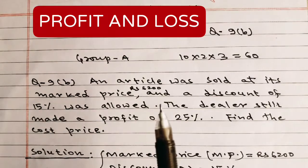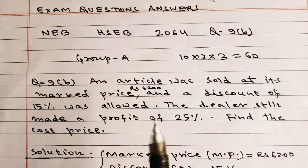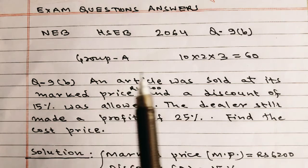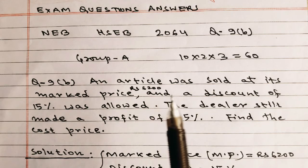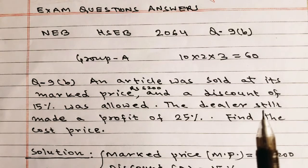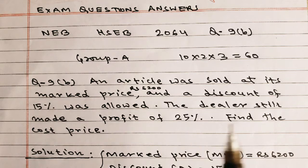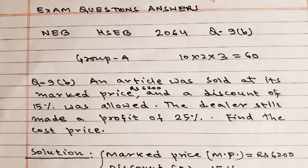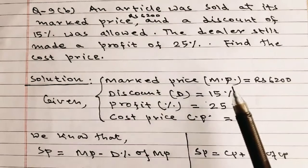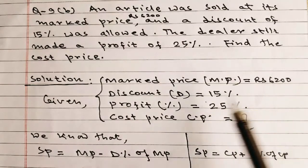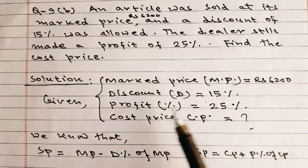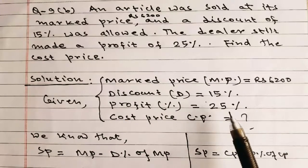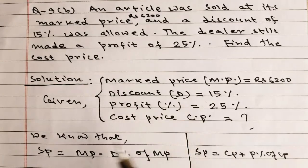An article was sold at its marked price of rupees 6200 and a discount of 15% was allowed. The dealer still made a profit of 25%. Find the cost price. This problem is related to profit and loss. Marked price = Rs. 6200, discount = 15%, profit = 25%, find cost price.